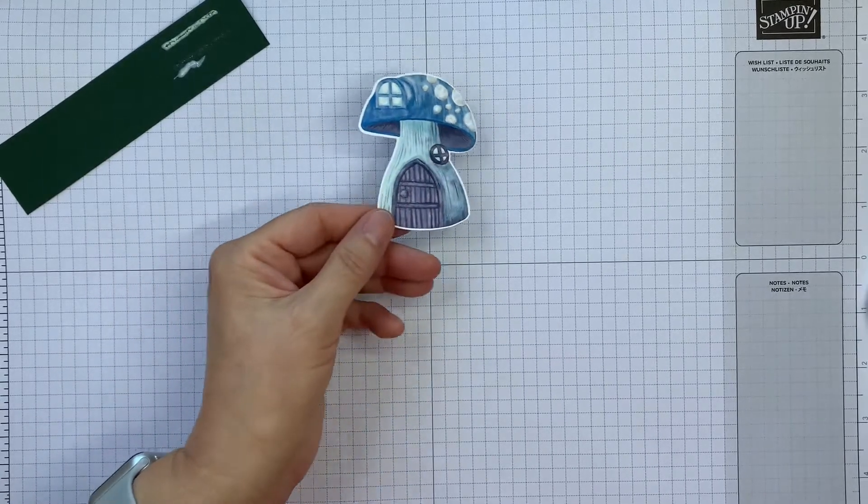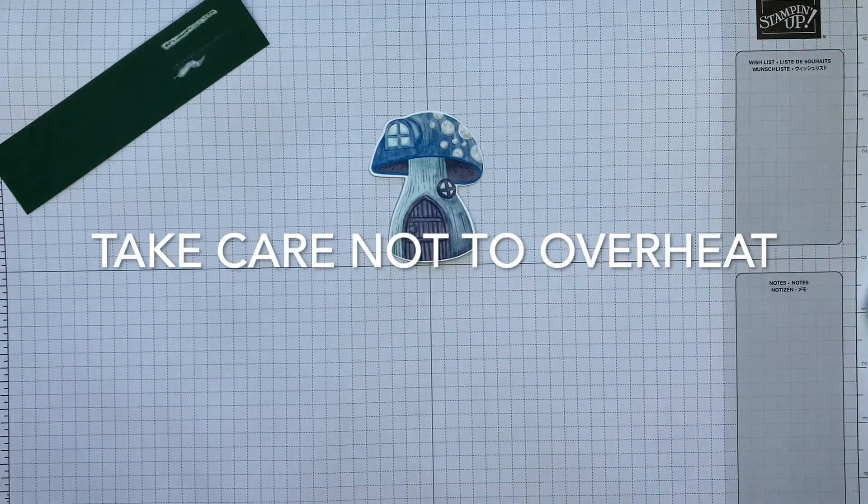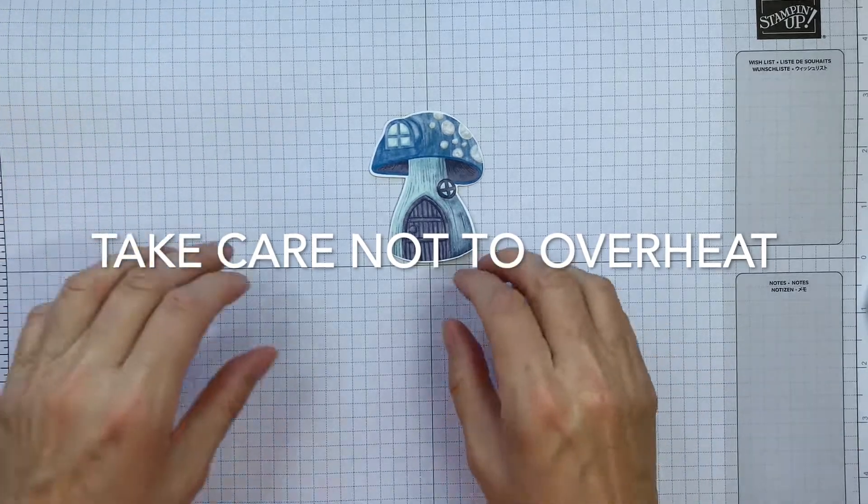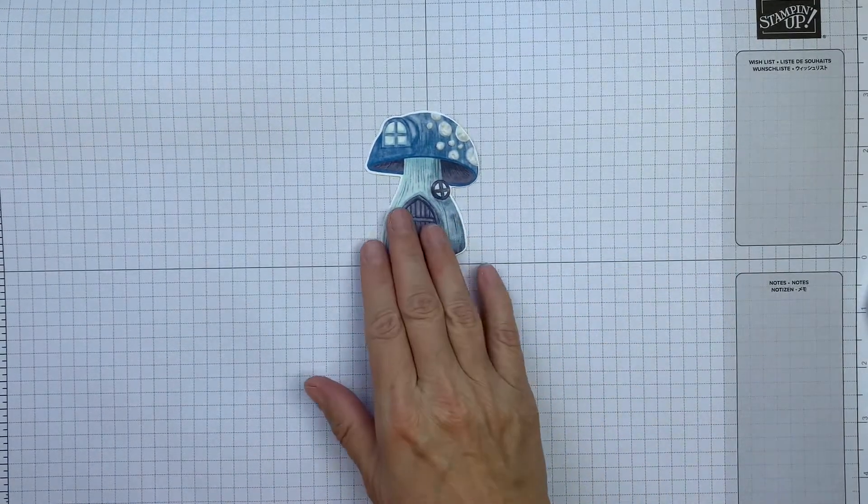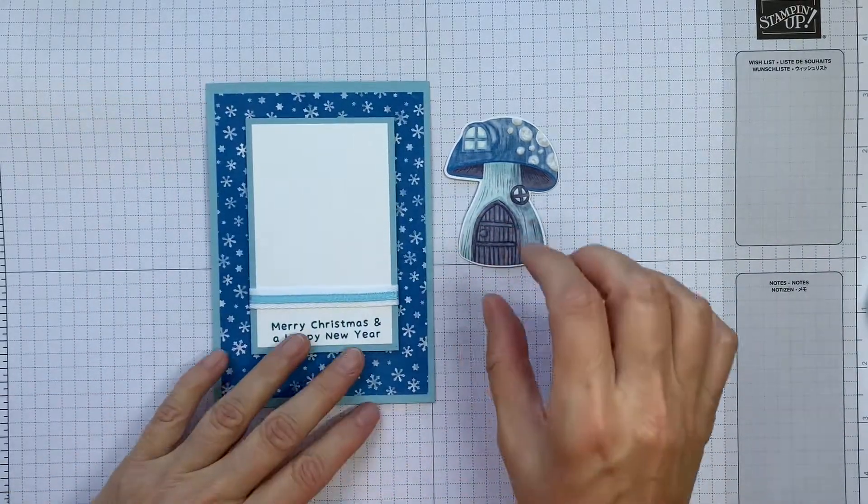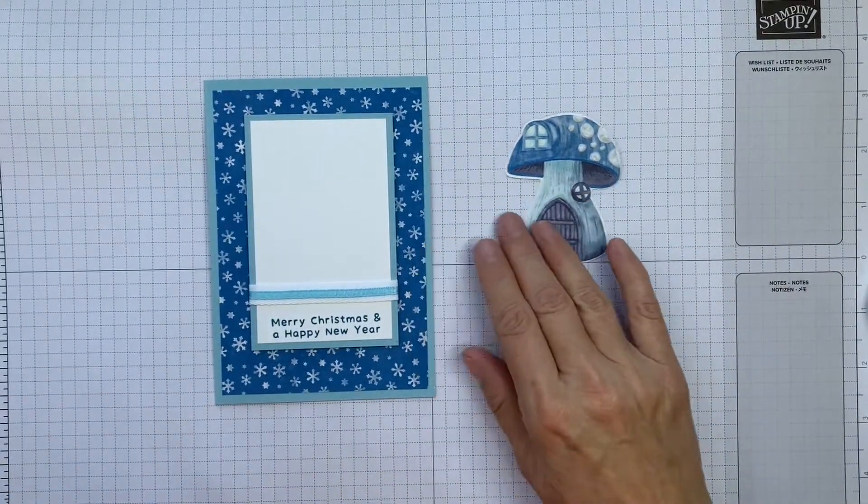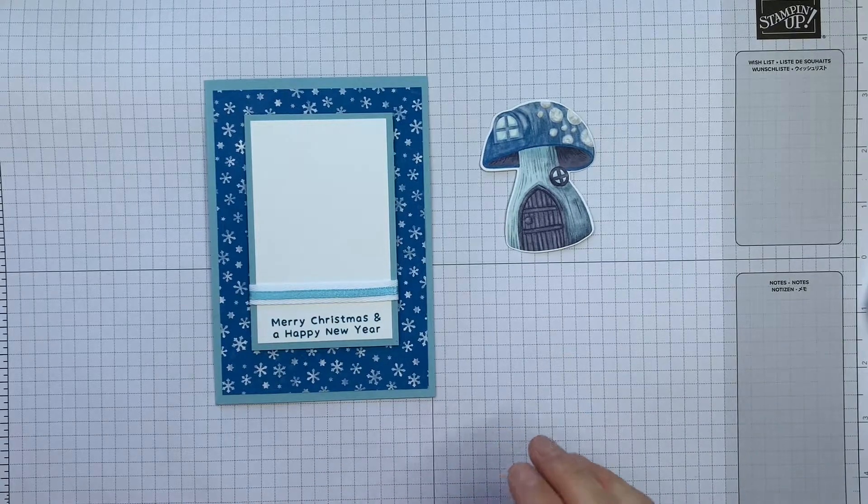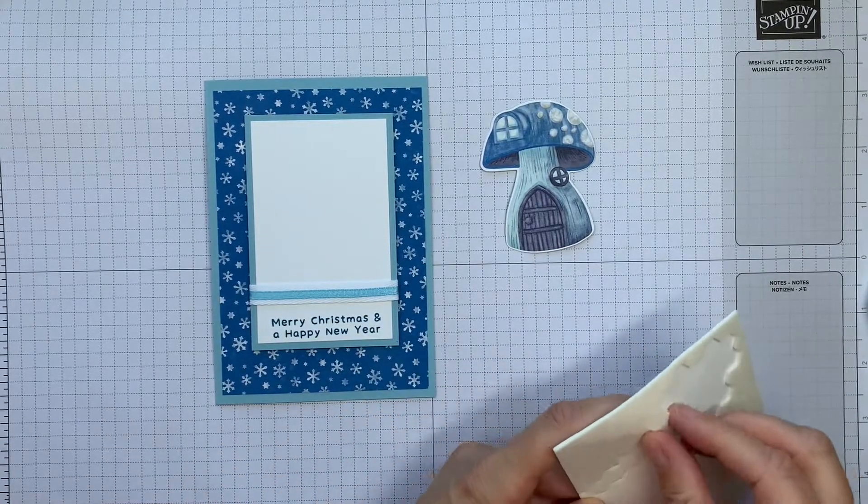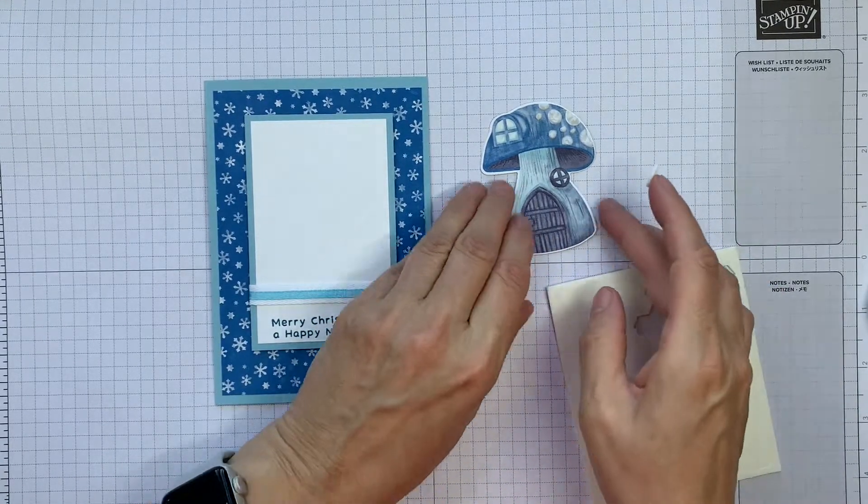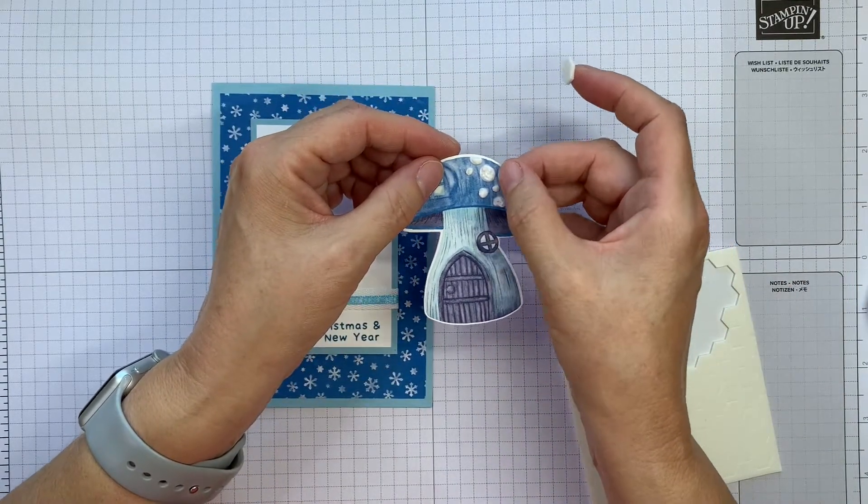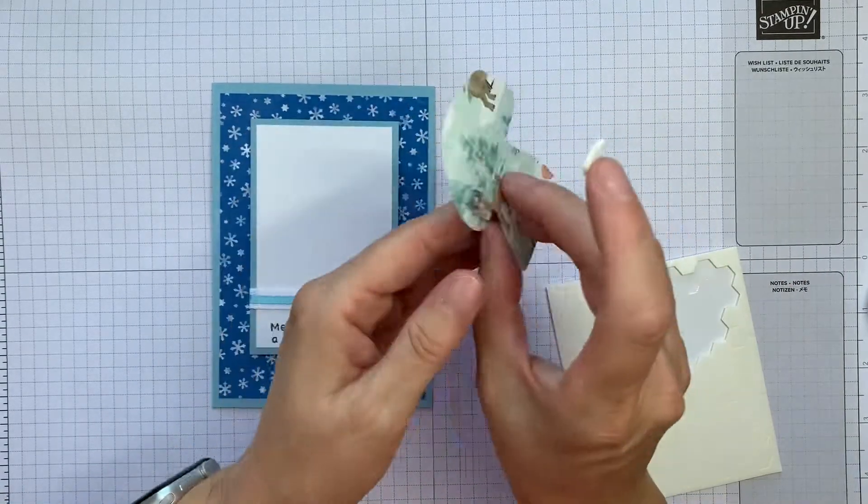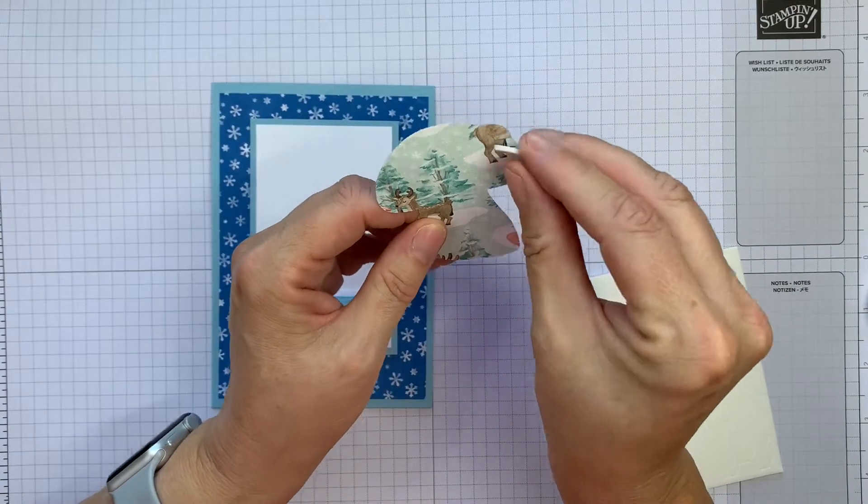And there we go. I've possibly just heated that a little bit too long. It was just starting to turn a bit brown there, so do be careful not to overheat it. So I'm now going to pop some dimensionals on the back of here and it does dry or harden pretty quick once you pop the heat gun on it.